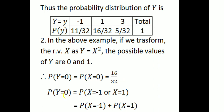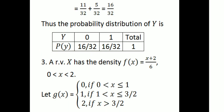The probability of Y = 1 corresponds to X = minus 1 or X = 1, so P(Y = 1) = P(X = minus 1) + P(X = 1) = 11/32 + 5/32 = 16/32. Thus the probability distribution of Y is: Y = 0 with probability 16/32 and Y = 1 with probability 16/32, totaling 1.